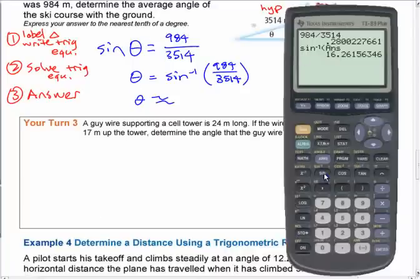Or you could go all in one step here and do sine inverse, 984, not 384, 984 divided by 35, 1, 4. If you happen to be talking right now, could you not? So either way there. Whichever way you're approaching it on the calculator.